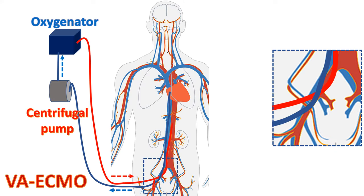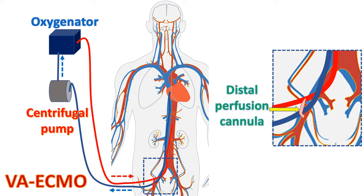Bleeding, limb ischemia, and sepsis are the important complications of extracorporeal CPR. Limb ischemia is managed with a distal perfusion cannula to improve distal flow in the femoral artery. The distal perfusion cannula connects the arterial return line from the oxygenator to the distal femoral artery, so that a portion of oxygenated blood is used to perfuse the distal lower limb beyond the point of connection of the main femoral arterial ECMO line.